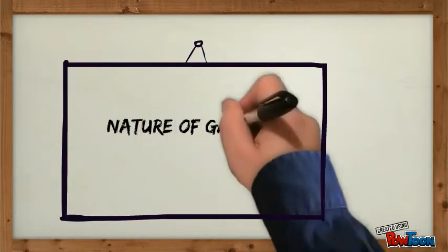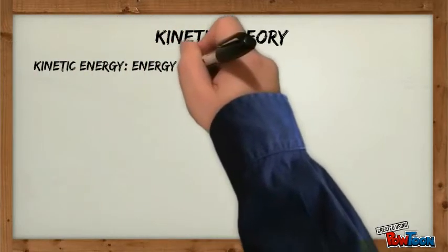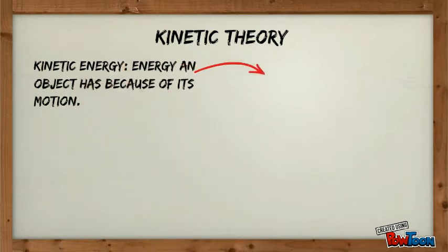Let's start with nature of gases. First of all, we need to know what kinetic theory is. The kinetic theory states that the tiny particles in all forms of matter are in constant motion. This includes the energy of an object it has because of its motion. This is called kinetic energy.